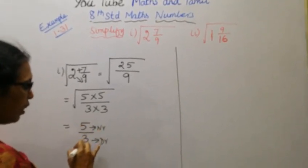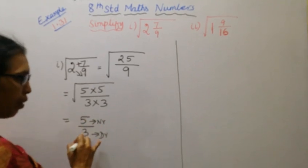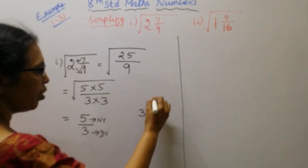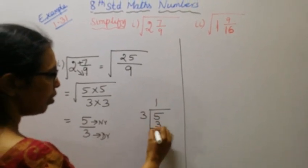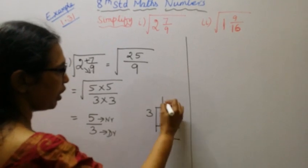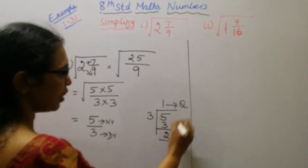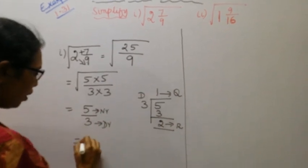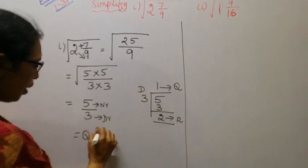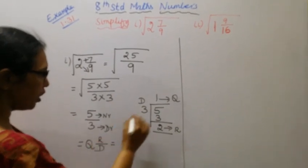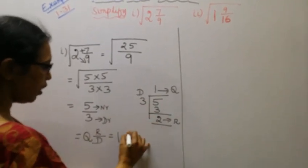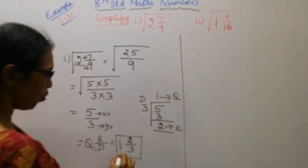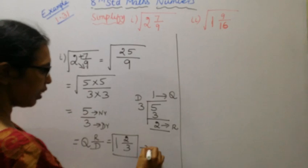To convert to mixed fraction: quotient, remainder, divisor. Quotient 1, remainder 2, divisor 3. This is mixed fraction: 1 2/3 is the answer.